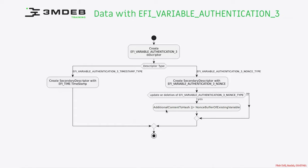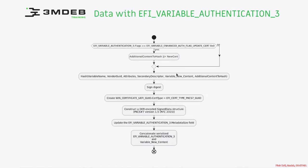This nonce buffer is added as additional content to hash, which should also contain the new variable value. If we're not doing an update or deletion, we just skip that step. Then we check the variable authentication flags — the authentication tree flags.